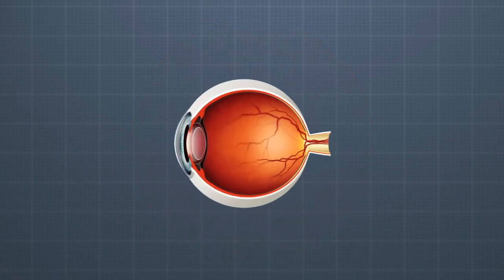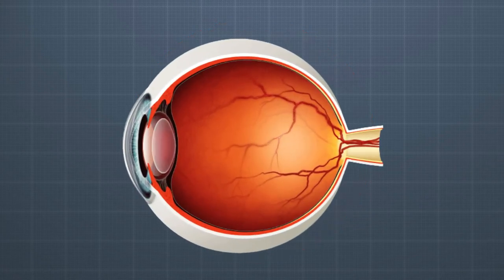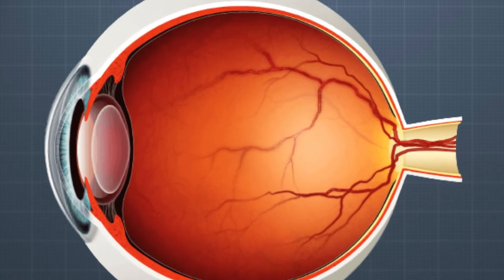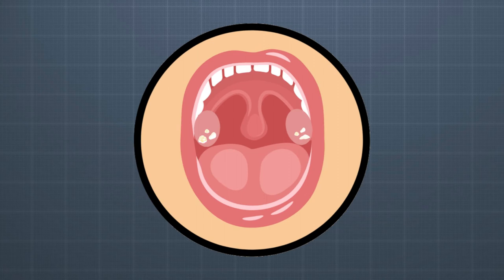It is then replaced with a clear artificial lens implant. At number three is the tonsillectomy. This involves the removal of either one or both of the tonsils, which are located at the back of the mouth. Your tonsils help fight infections.